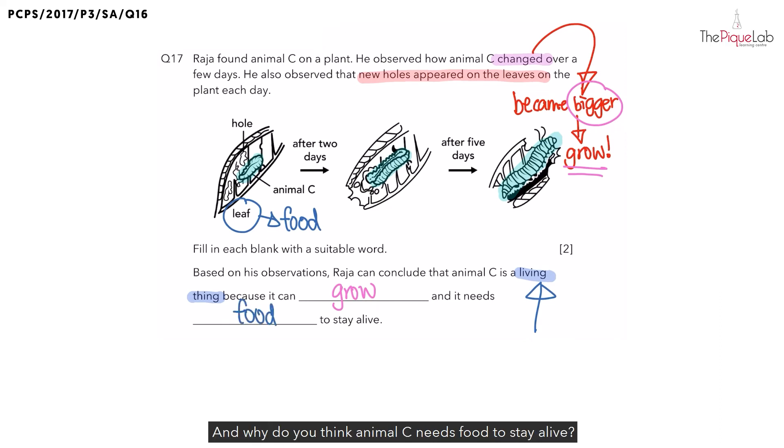And why do you think animal C needs food to stay alive? Because animal C is a living thing. And all living things need three things to stay alive. What are these three things? Living things need air, food, and water to stay alive. And that is why animal C needs food to stay alive as well.